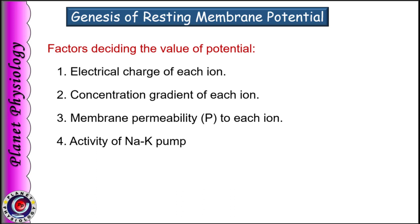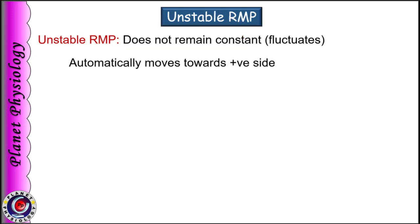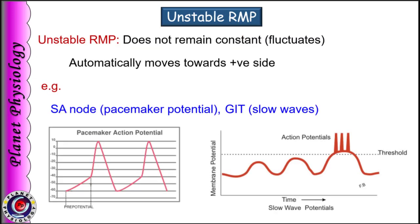Even though we say that resting membrane potential is –70 or –90 mV, in some tissues it is not a fixed value — it keeps on fluctuating slowly. For example, in the SA node as well as in gastrointestinal smooth muscles, resting membrane potential gradually drifts by a few mV towards the positive side. Its application you will study as you learn pacemaker potential or the slow waves in the gastrointestinal system.